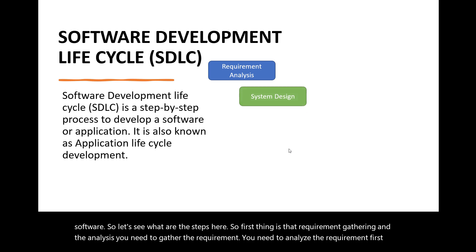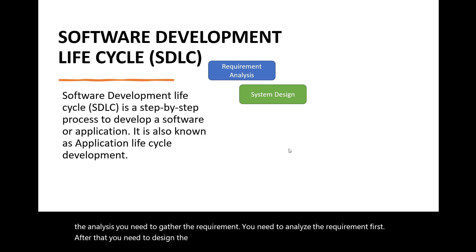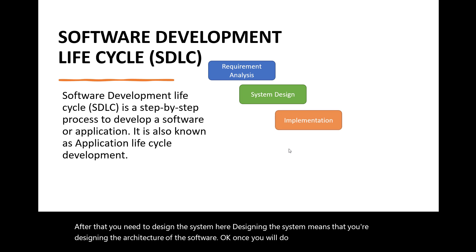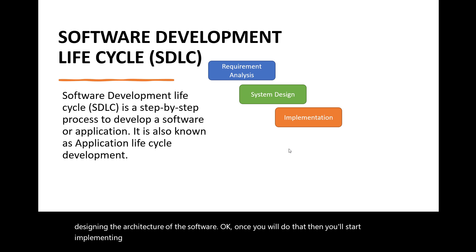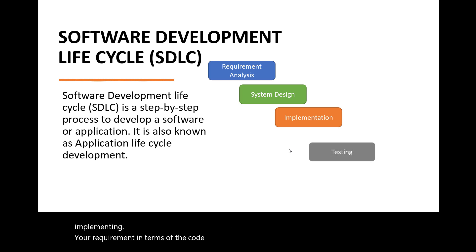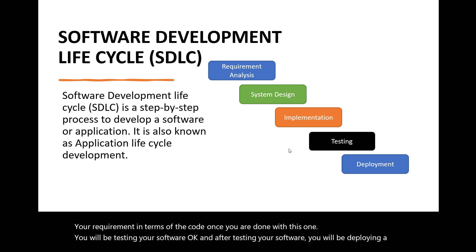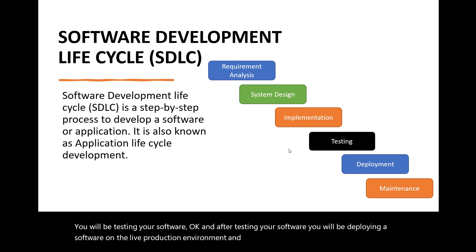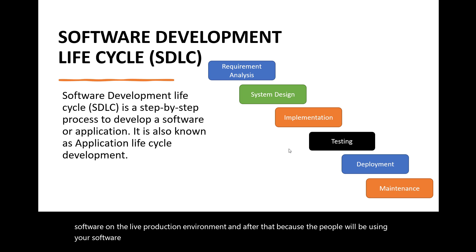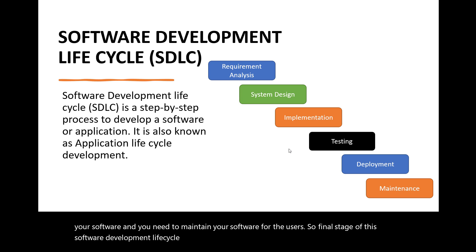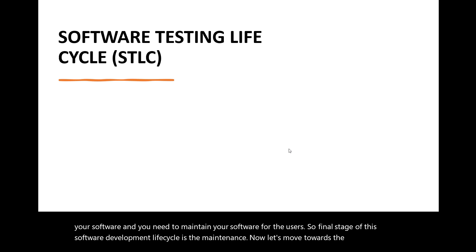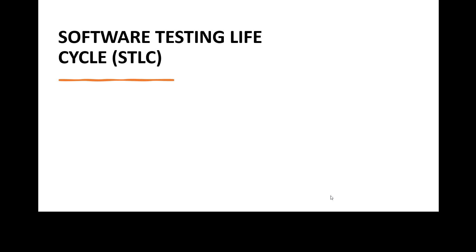The steps are: first, requirement gathering and analysis. After that, you design the system — meaning you design the architecture of the software. Once done, you start implementing the requirement in terms of code. After that, you test the software, then you deploy it to the live production environment. Finally, because users will be using your software, the last stage is maintenance.